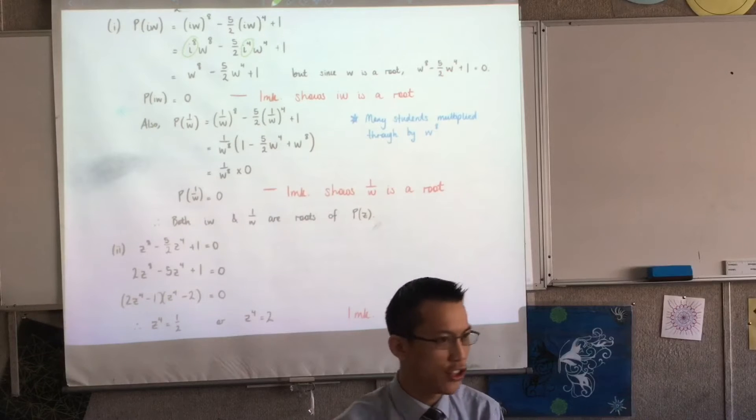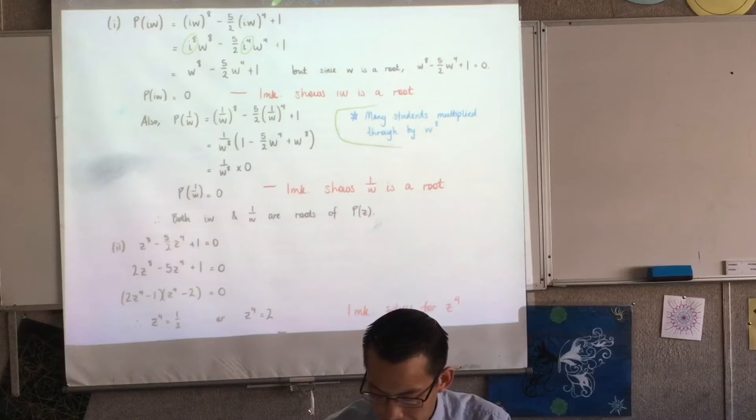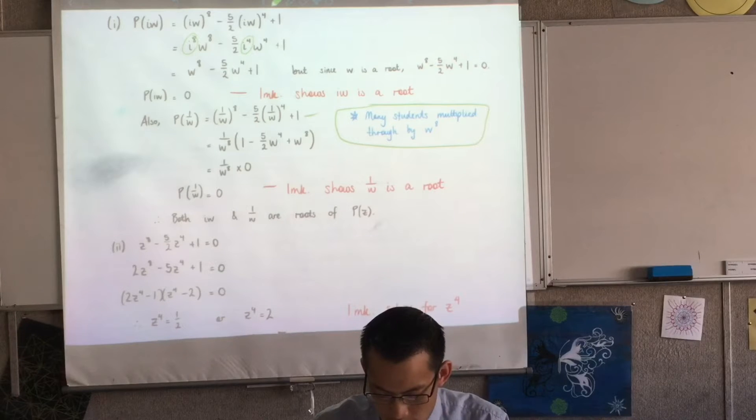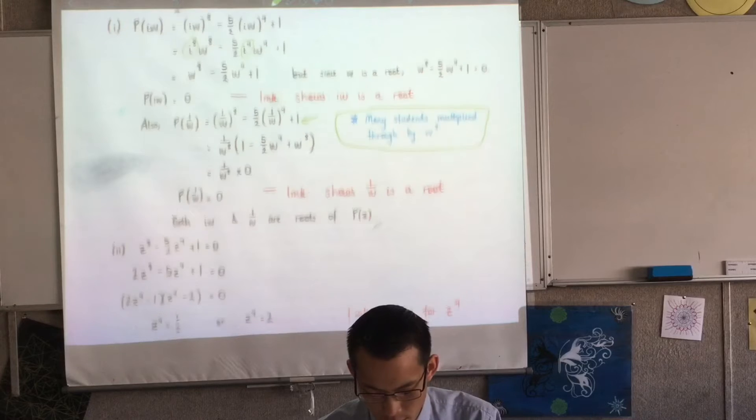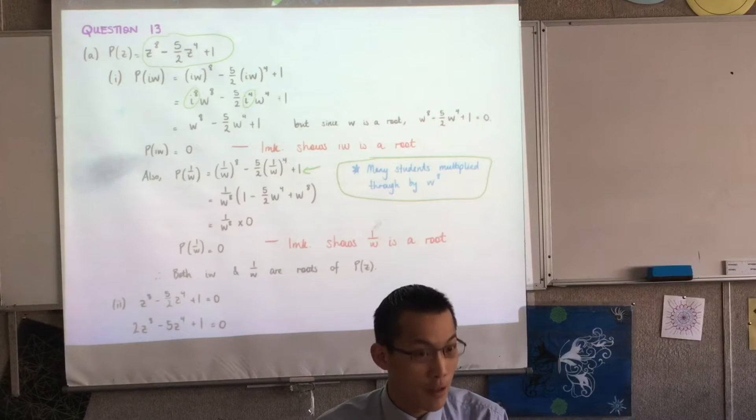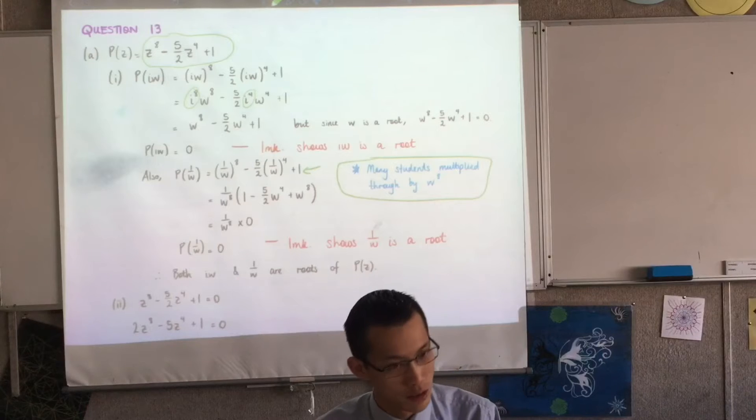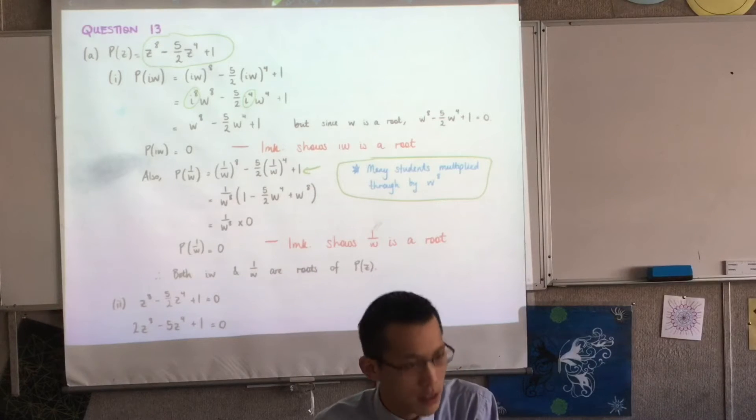But when we got to substituting in the reciprocal of w, the most common error was that students saw this thing and they said oh, gross, fractions. I don't want fractions. The only thing I know how to do with this, so I better get rid of my fractions and subsequently students multiplied through. Now you can't do that.